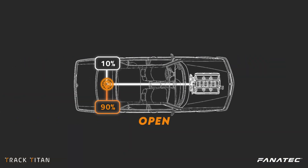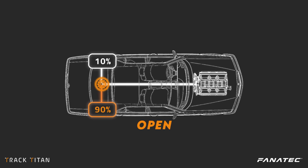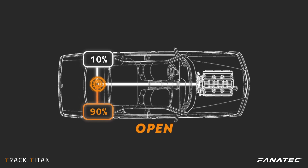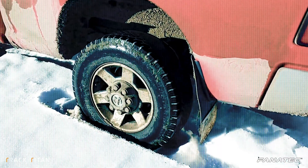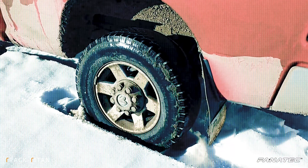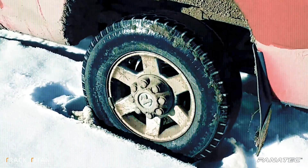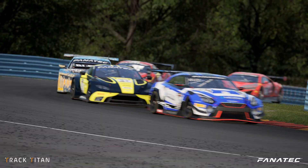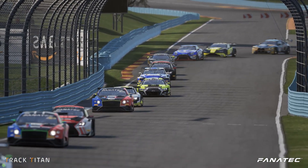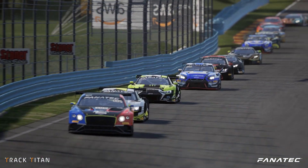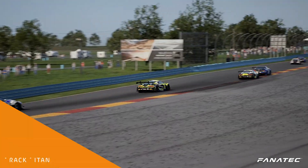When the diff is fully opened it will send most of the engine's power to the wheel that has the least rotational resistance. So in theory, if one wheel is stuck, the other is supplied with 100% of the engine power. These are both extremes and you probably don't want to use a fully open or locked diff when racing, but it helps to understand how the differential works.